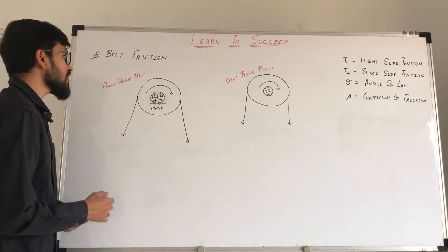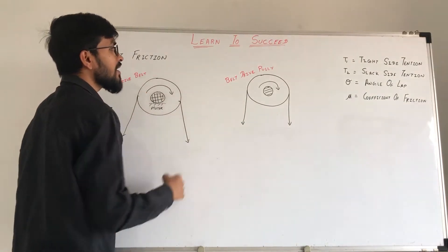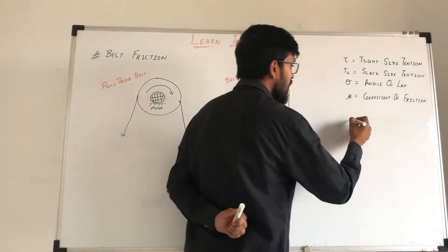Then you have two different drives. One is the pulley drive point and one is the belt drive pulley. In belt friction you can use this formula.